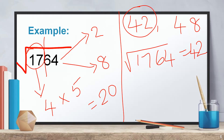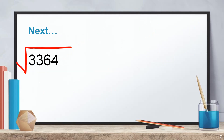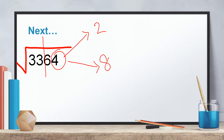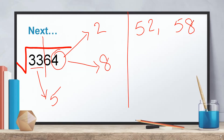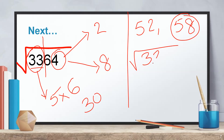Let's do more practice questions to reduce the time taken. Next: √3364. Group into 33 and 64. Last digit is 4, so the answer ends with 2 or 8. The perfect square below 33 is 25, which is 5². So the choices are 52 or 58. Multiply 5 × 6 = 30. Since 33 is greater than 30, choose the greater option. So √3364 = 58.